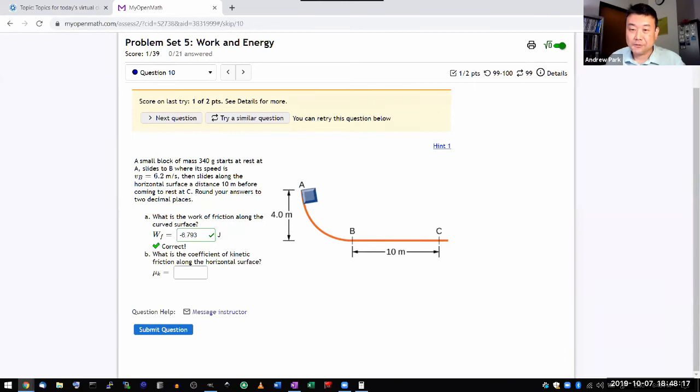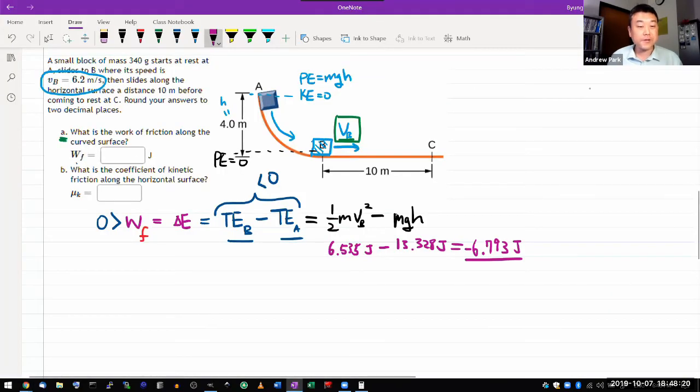And then it asks, what is the coefficient of kinetic friction along the horizontal surface? That's a bit of an odd question to ask. So I guess this is where you use your intuitive problem solving, work forward, backward. It's asking you for coefficient of kinetic friction.